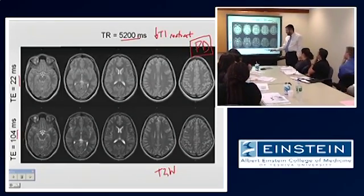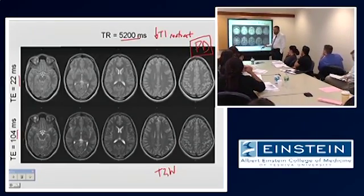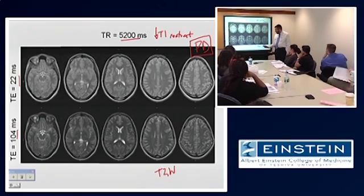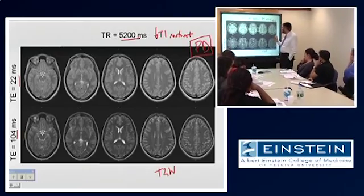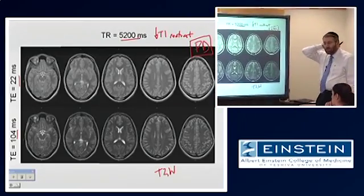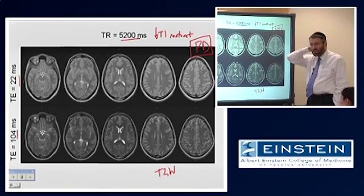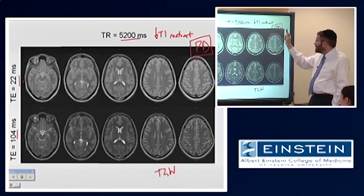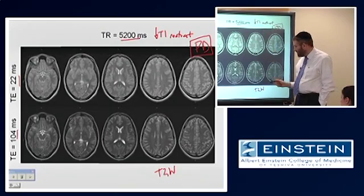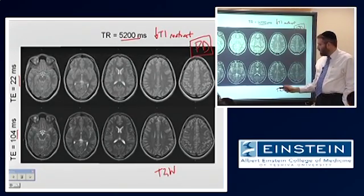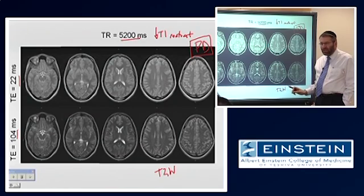Because once you eliminate the components of contrast based on relaxation, there's really only one thing that's left. Notice that you can never eliminate contrast in these images that's a function of proton density. It's always going to be there. All you can do is modulate how much T1 and T2 information is going to be in your image. And of course, you can never completely eliminate that either.